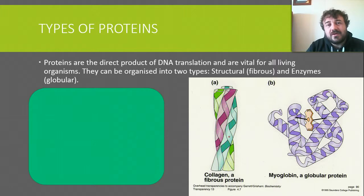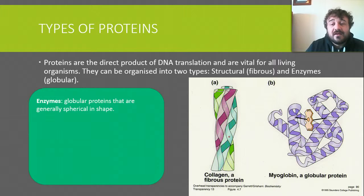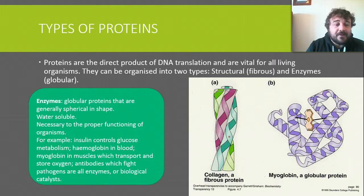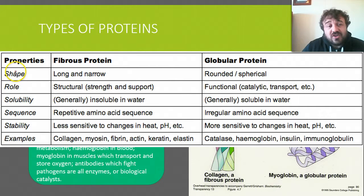Next, we move on to globular proteins, or enzymes. They're usually roughly spherical in shape and water-soluble, so they can move throughout cells. They're necessary for the proper functioning of organisms at both a cellular and organism level. Examples include insulin, hemoglobin, myoglobin, and antibodies. Here's a quick comparison summary of the two types.